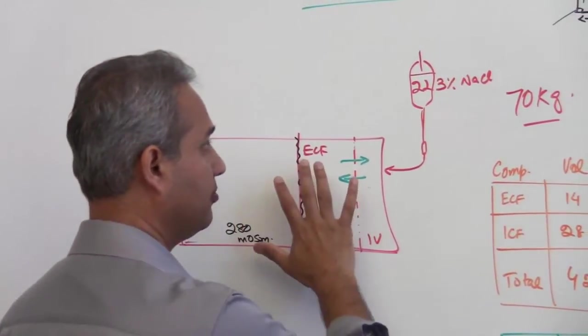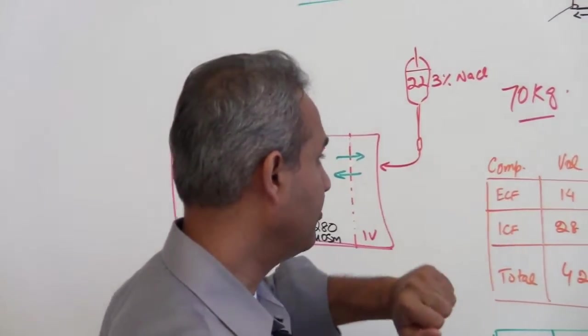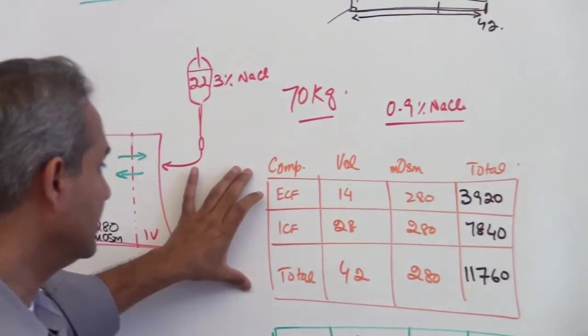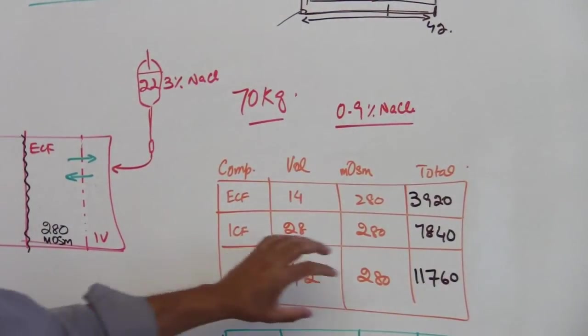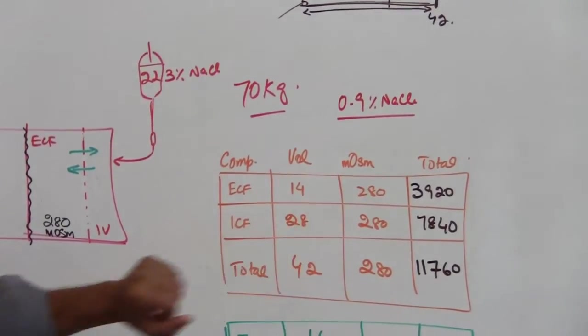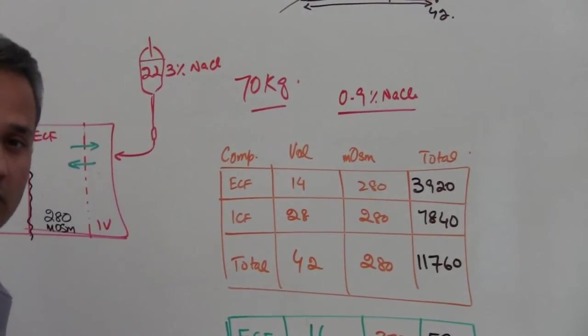So in a normal person before receiving this 2 liter of 3 percent sodium chloride, 70 kilogram weight, his status is such that ECF is 14 liter, ICF is 28 liter, total body fluid is 42 liters, the osmolarity is 280 milliosmoles.